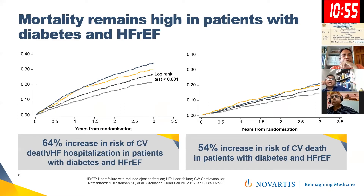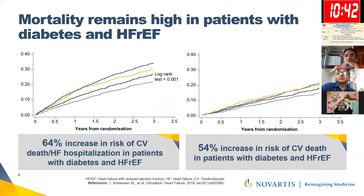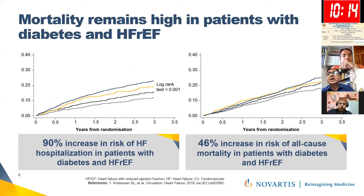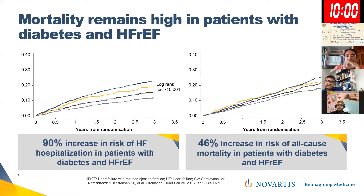Mortality remains high in diabetic patients, particularly those with reduced ejection fraction. A study published in Heart Failure in 2016 by Carstensen et al. showed a 64% increase in risk of cardiovascular death and hospitalization for heart failure in patients with diabetes and reduced ejection fraction, a 54% increase in cardiovascular death alone, a 90% increase in risk of heart failure hospitalization, and a 46% increase in all-cause mortality. So there is clearly increased mortality due to heart failure in diabetic cohorts.